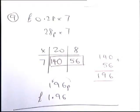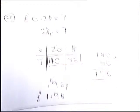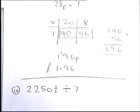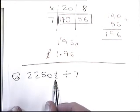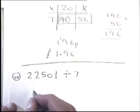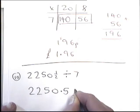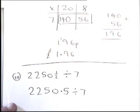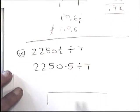The next question was 2250 and a half divided by 7. It was useful to change that half into a decimal — 0.5 — since dividing with decimals is easier than dividing with fractions. Because it's a division we'll use the bus stop method, with 2250.5 going under the bus stop and 7 going outside.